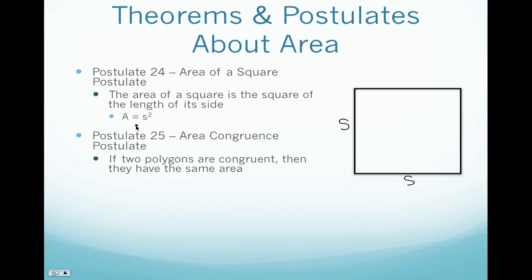With that postulate, we also have an area congruence postulate, which is Postulate 25. This postulate states that if two polygons are congruent, then they have the same area. That makes sense because if they're congruent, they have the same angle measures and the same side lengths, so everything about them is the same, and therefore the area is also going to be the same.